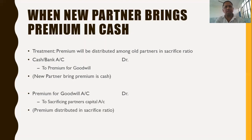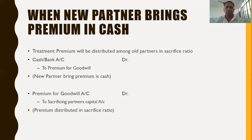Students are advised: if in the question the old profit sharing ratio is given but there is no other information regarding the new partner's share or sacrifice, it means the old profit sharing ratio is equal to the sacrificing ratio, and goodwill is distributed among the old partners in their old ratio.